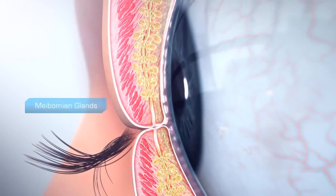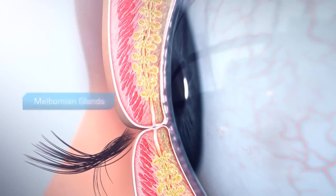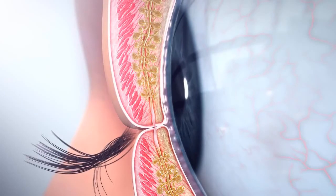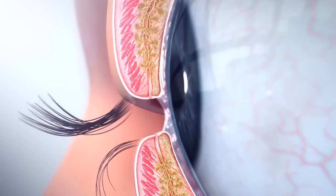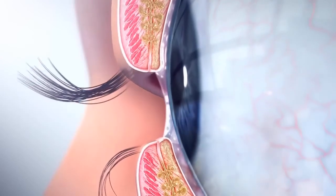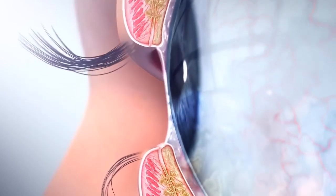Meibomian glands, at the margins of the upper and lower lids, produce and inject complex oil into the tears with each blink. This thin layer of oil prevents tears from evaporating and increases lubrication and comfort.